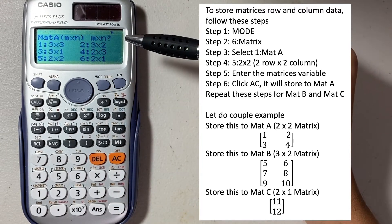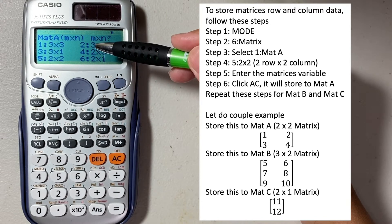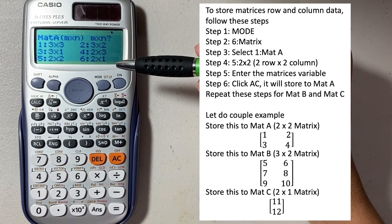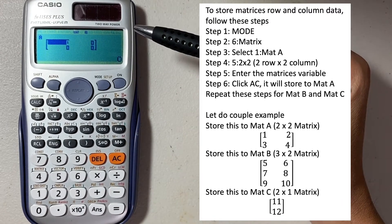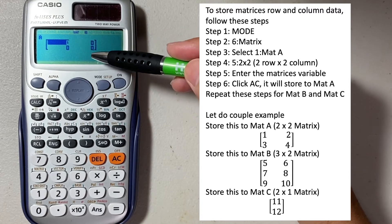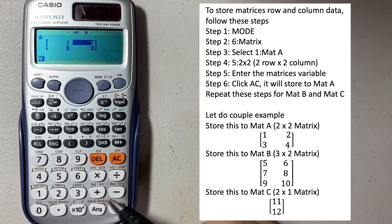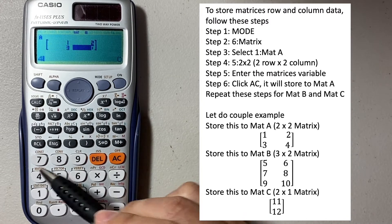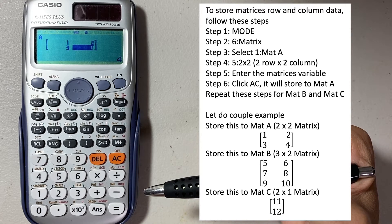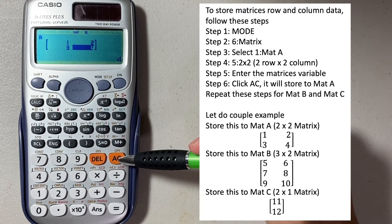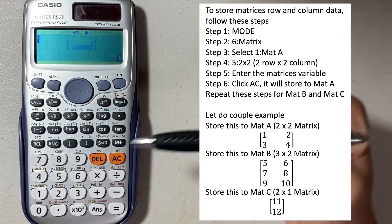Here, as you can see, we go by different row and column. So we can select either 3x3 or 2x1. For example, we're going to choose two rows and two columns, which is number 5. Select that. This is the row and column where we can start entering data. For example, if you have 1, 2, 3, 4 — and once you have finished entering the data, you have to click AC in order to store the data into matrix A.